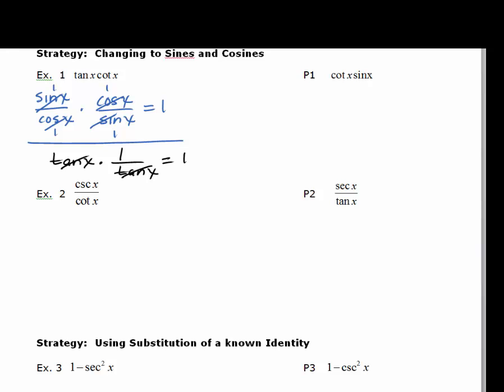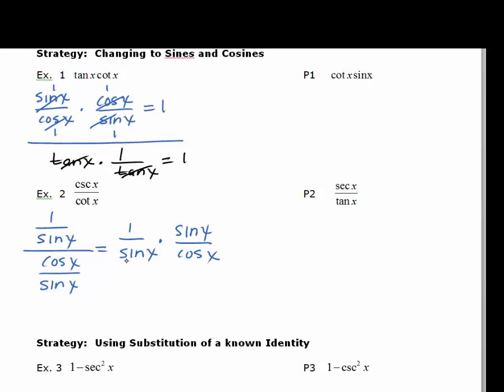Example 2: we've got cosecant x over cotangent x. We'll change to sines and cosines. Cosecant is 1 over sine, divided by cotangent which is cosine over sine. Multiply the numerator by the reciprocal of the denominator. We can cancel the sines, and we get 1 over cosine x. But there should be no fraction in our answer, so 1 over cosine can be written as secant x.